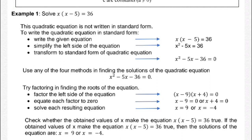Use any of the four methods in finding the solutions of the quadratic equation. The easiest here is factoring. Find factors of negative 36 that add up to negative 5: that's negative 9 and 4, since negative 9 times 4 is negative 36, and negative 9 plus 4 is negative 5. So the factored form is the quantity of x minus 9 times the quantity of x plus 4 equals 0. Applying the zero product property: x minus 9 equals 0 or x plus 4 equals 0. So x equals 9 or x equals negative 4.